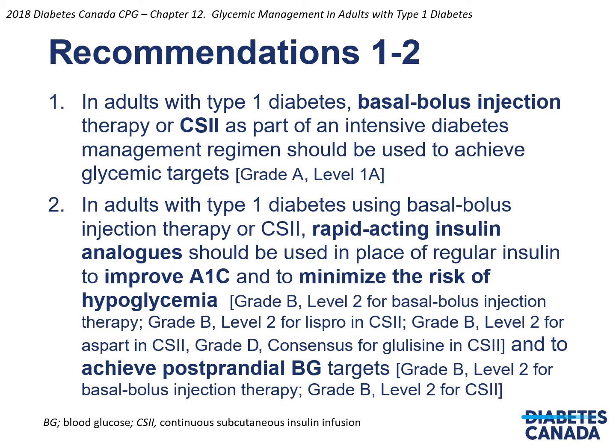Here are the recommendations for Chapter 12 of the 2018 guidelines. Recommendation 1: In adults with type 1 diabetes, basal bolus injection therapy or CSII, as part of an intensive diabetes management regimen, should be used to achieve glycemic targets. Recommendation 2: In adults with type 1 diabetes using basal bolus injection therapy or CSII, rapid-acting insulin analogs should be used in place of regular insulin to improve A1C, minimize the risk of hypoglycemia, and achieve postprandial blood glucose targets.